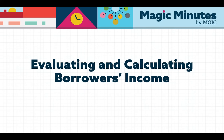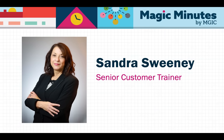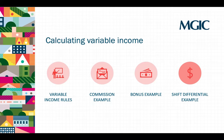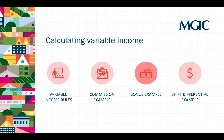Hello, and welcome to our series on evaluating and calculating borrowers' income. I'm Sandra Sweeney, senior customer trainer and program designer for MGIC. This is part three in our series, and today we'll discuss how to calculate variable income. In this video, we'll look at the rules set by Fannie Mae and Freddie Mac that you need to follow when evaluating variable income, and then I'll go over three examples: one involving commission, one including bonus income, and one featuring shift differential.